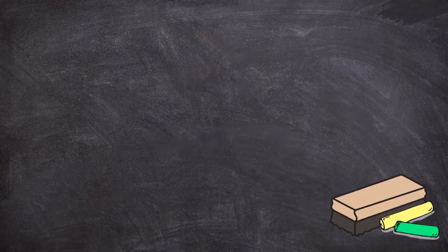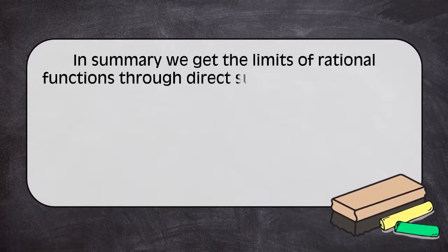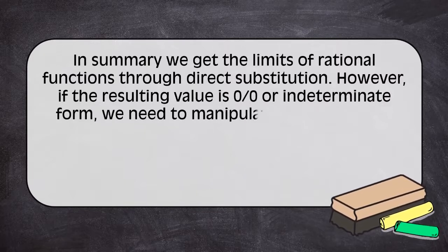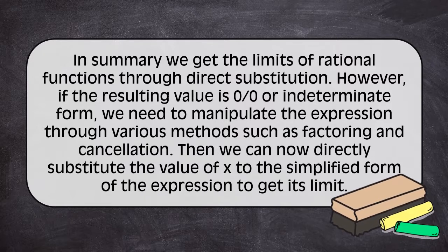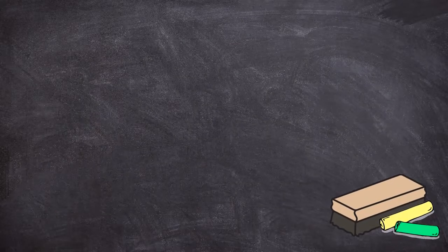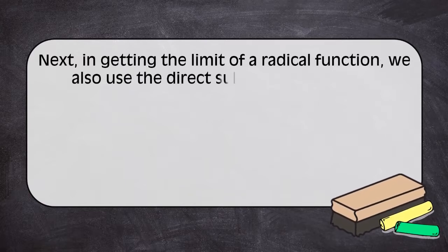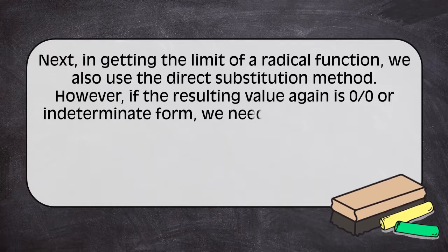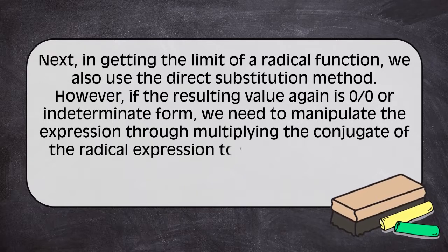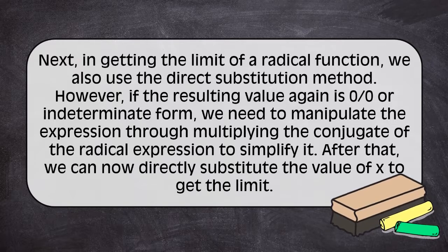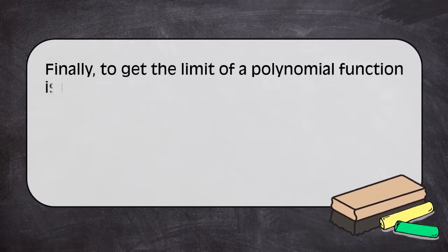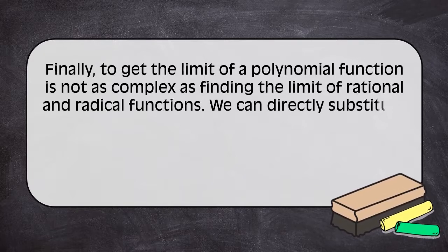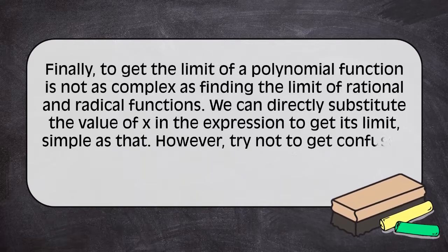That's it! In summary, we get the limits of rational functions through direct substitution. However, if the resulting value is 0 over 0 or in the indeterminate form, we need to manipulate the expressions through various methods such as factoring and cancellation. Then we can directly substitute the values of x to the simplified form of the expression to get its limit. Next, in getting the limit of radical function, we also use the direct substitution method. However, if the resulting value again is 0 over 0 or in the indeterminate form, we need to manipulate the expression through multiplying the conjugate of the radical expression to simplify it. After that, we can now directly substitute the value of x to get the limit. Finally, to get the limit of polynomial function is not as complex as finding the limit of rational and radical functions. We can directly substitute the value of x in the expression to get its limit. Simple as that!